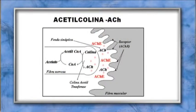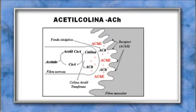A acetilcolina é formada no axônio, na sinapse colinérgica, a partir da acetil-CoA (vinda da mitocôndria) e da colina (vinda da dieta). Sob a ação da enzima colina acetiltransferase, é formada e armazenada em vesículas. Quando ocorre um estímulo nervoso que atinge o potencial de ação, o cálcio entra, a vesícula sofre exocitose e a acetilcolina é lançada na fenda sináptica, onde pode combinar-se com o receptor, gerando resposta, ou ser destruída pela acetilcolinesterase e pela butirilcolinesterase.